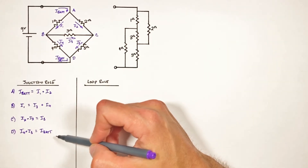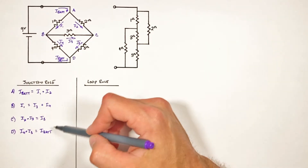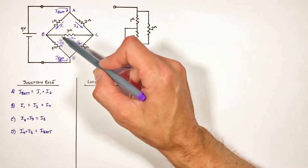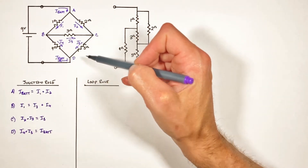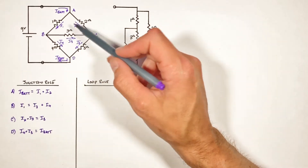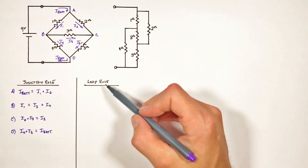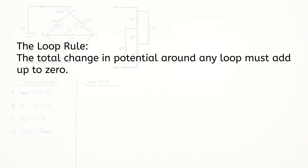Counting our unknowns — I_battery and the five resistor currents — we have 6 unknowns and only 4 equations from the junction rule. Basic algebra tells us that isn't going to work, so we need to turn to the loop rule.